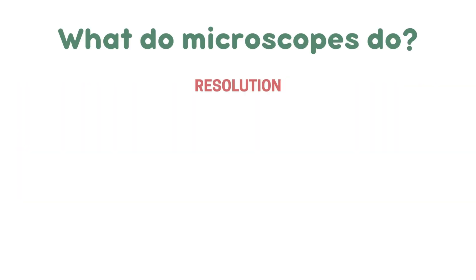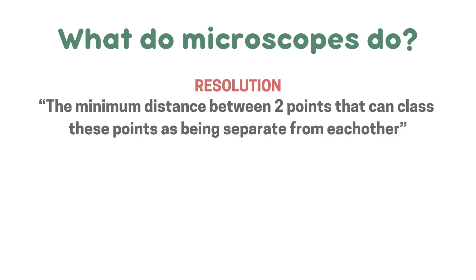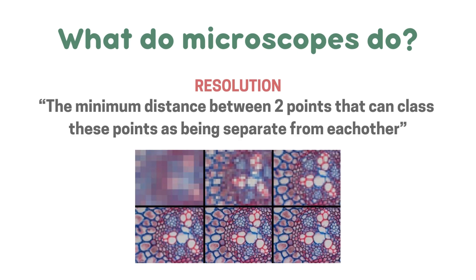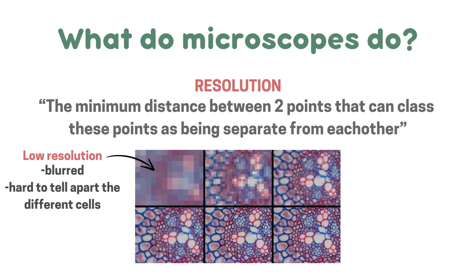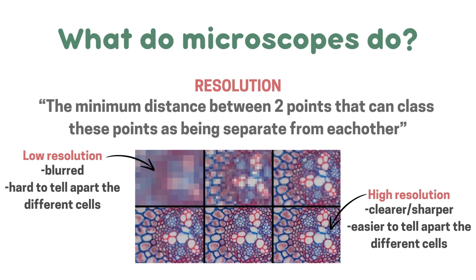You also need to know about what resolution is, and this is the minimum distance between two points that allows those points to be classed as separate from each other. Here you can see the same sample being studied from different microscopes with different resolutions. The first picture seems to have a low resolution because it's blurred and it's hard to tell apart the different cells — they are indistinguishable from each other. The last image has a high resolution because the image is clearer and sharper, and it's easier to tell apart the different cells, so they are distinguishable from each other.